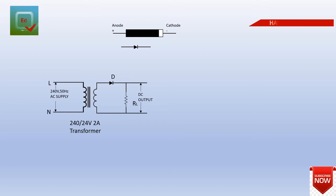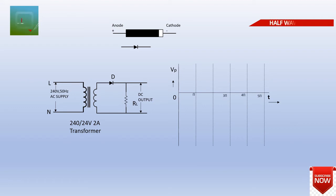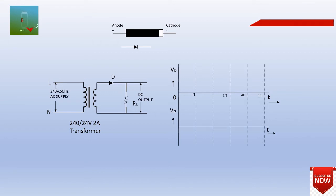Let's look at the graph. We have the X-axis and Y-axis. This is the timing on the X-axis. This is the DC output on the Y-axis. Let's look at the graph.